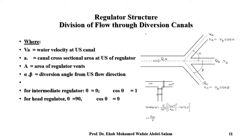Key variables include: water velocity, small canal cross-sectional area at upstream (lowercase a), capital A as the area of regulator vents, and alpha and beta as diversion angles as shown in the drawing. For an intermediate regulator, zeta equals zero so cosine zeta equals one. For a head regulator, zeta equals 90 degrees so cosine zeta equals zero.